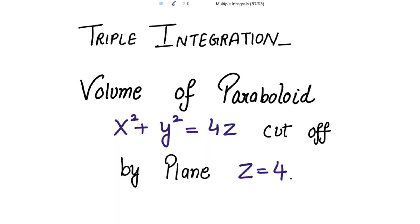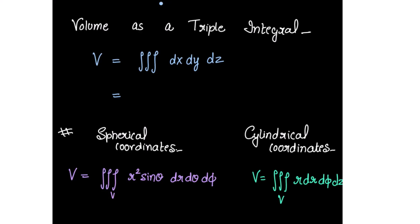Triple integration. We need to find the volume of the paraboloid x² plus y² equal to 4z, cut off by the plane z equal to 4. Before starting the solution, let's revise some formulas first. Volume as a triple integral: V is equal to triple integral dx dy dz.